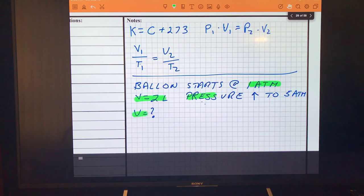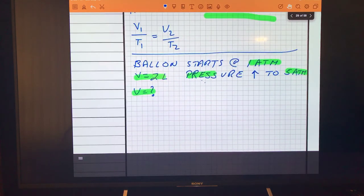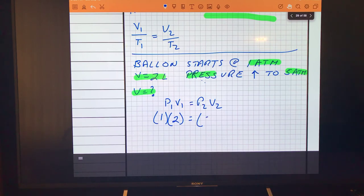We have pressure and volume, so that tells us we use the pressure-volume equation. P1 V1 equals P2 V2. So that initial pressure, one atmosphere, times the initial volume, two liters, equals five atmospheres (that's the new pressure), and then I don't know the volume. So I do some multiplication: one times two is 2.